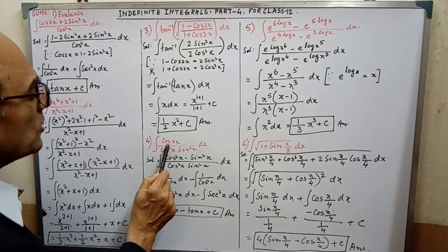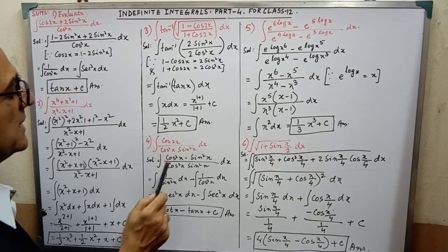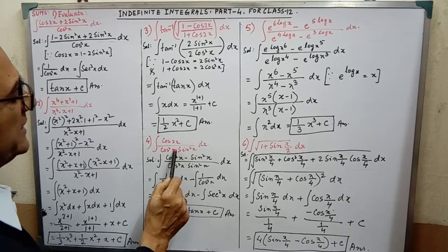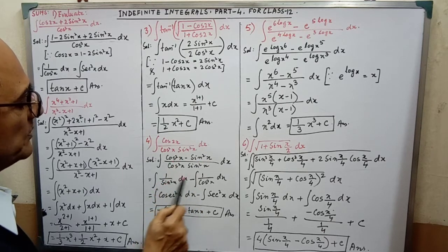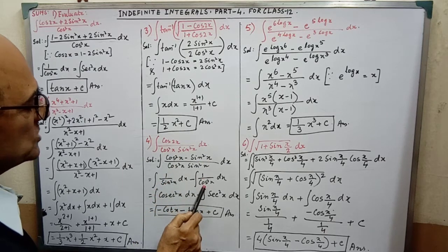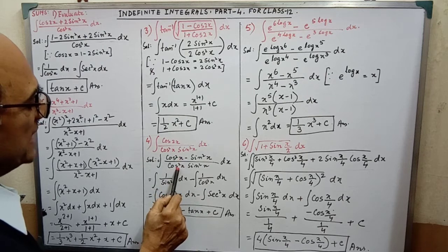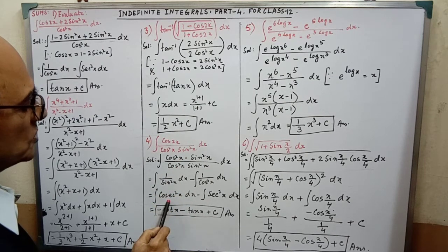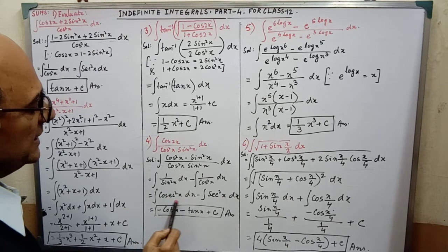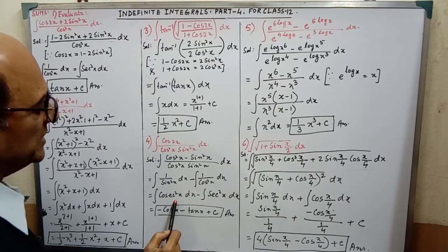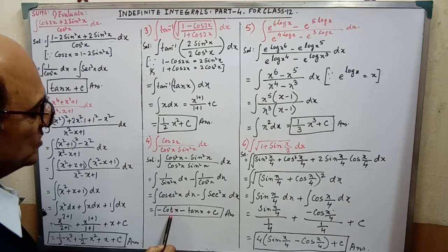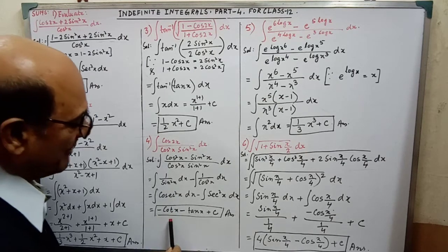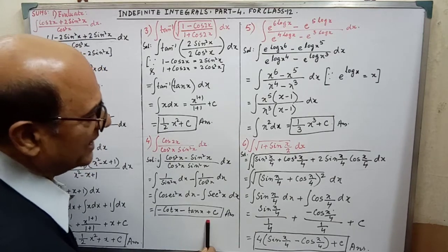Again, see cos 2x. Cos 2x here is cos square x minus sin square x. After writing the formula, we have to simplify in this way. Cos square x cancels. Then 1 minus sin square x — that is cos square x. Then we are getting the expression in the frame of the integration formula. After getting it, we apply the formula for integration, and we are getting the answer.